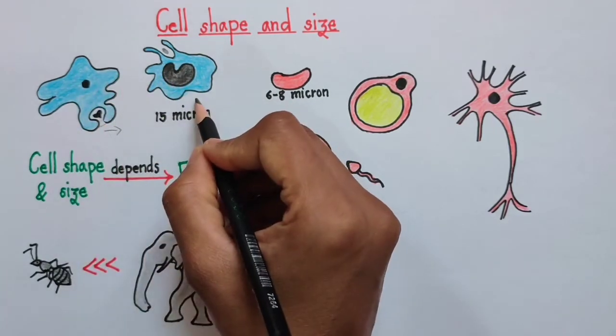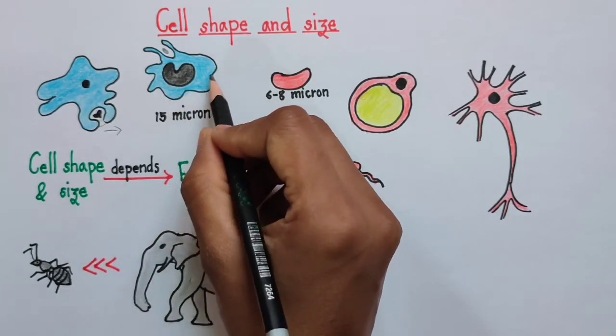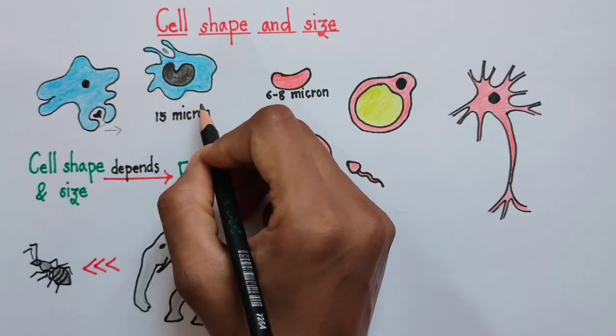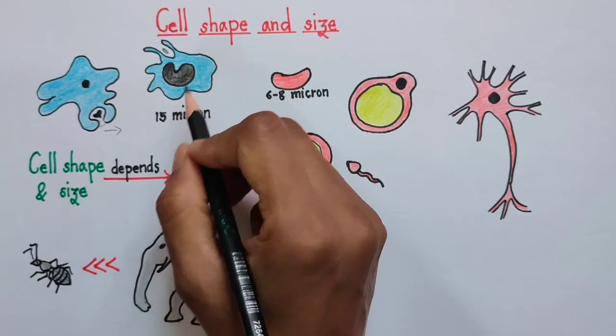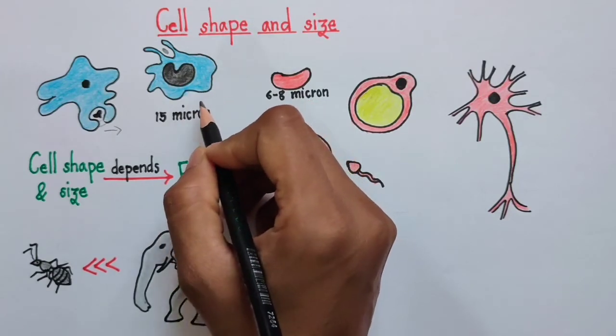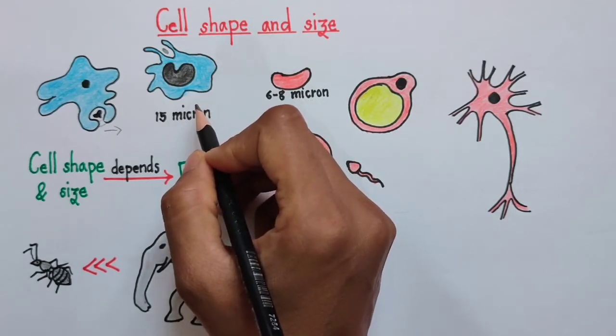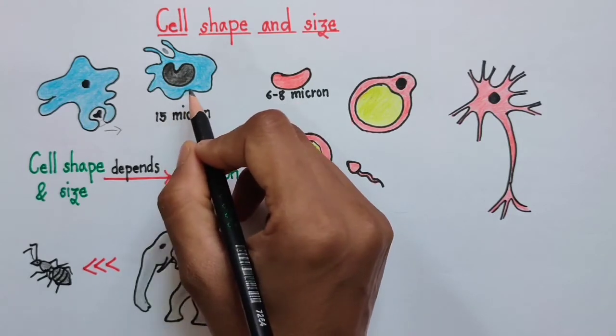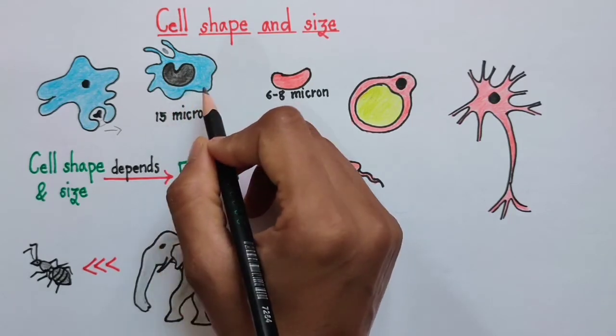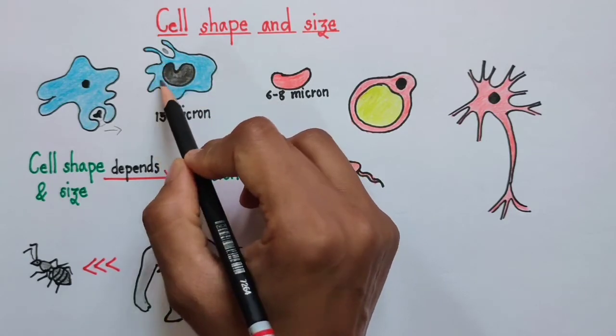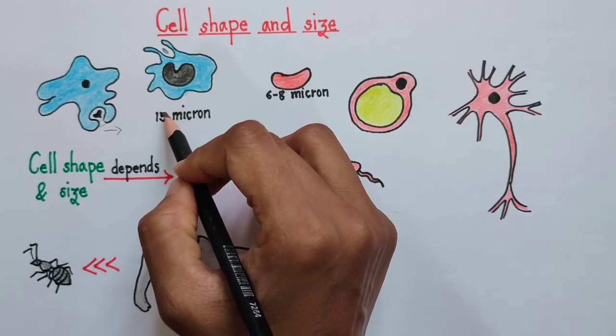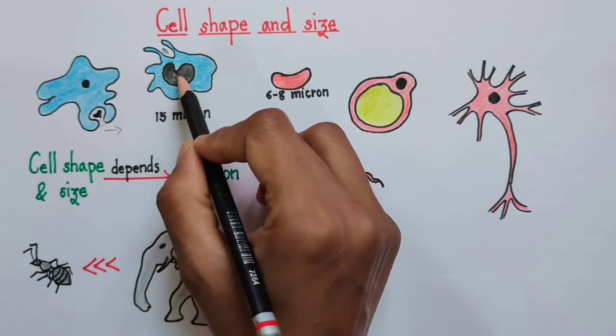Moving ahead, the second example I have taken is of our WBC. Now when we talk about our WBC, we have different types of WBCs like basophil, eosinophil, neutrophil, monocyte. And all these cells do not have any definite shape. As you can see, even this one doesn't have any definite shape, but we can identify them from the shape of their nucleus.